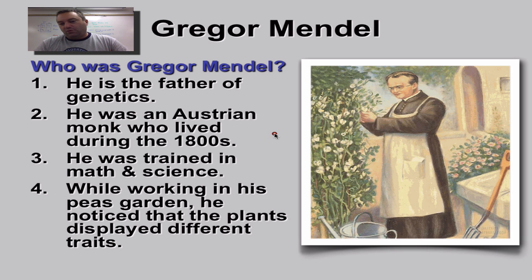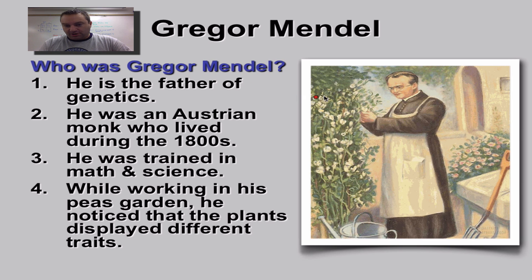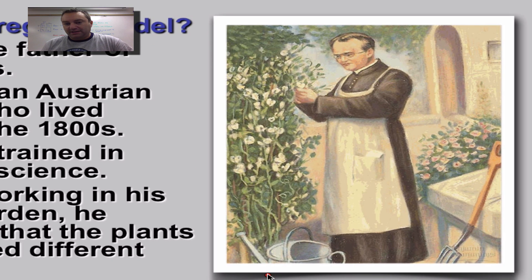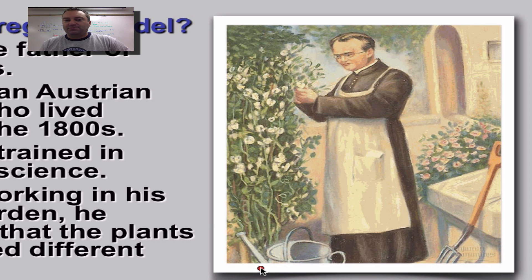One of his jobs as a monk is he has to tend to a garden, and in his garden he grows peas. So focus on this picture over here — here's a picture of Mendel tending to the peas in his garden. He noticed some things. Just being a scientist, he's very observant. He sees things out in the world.